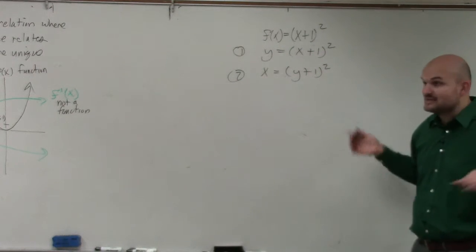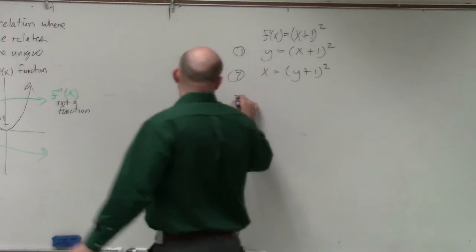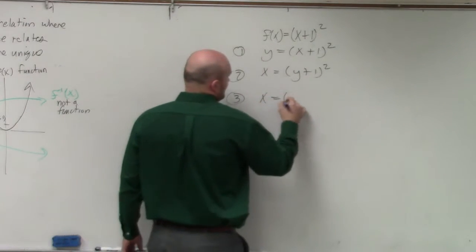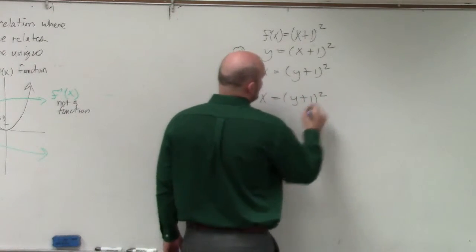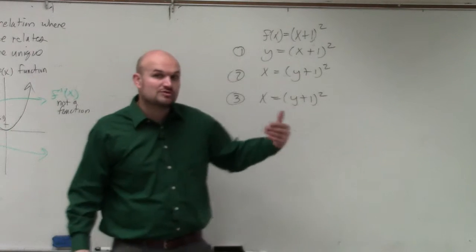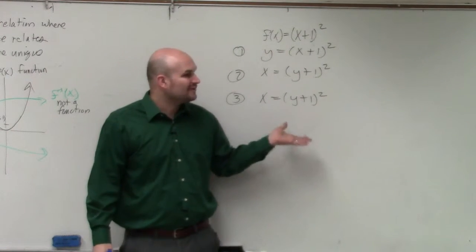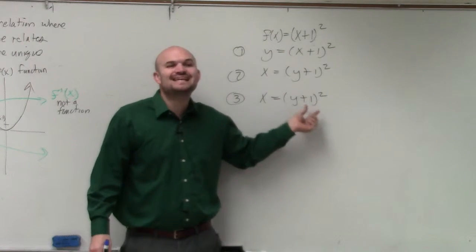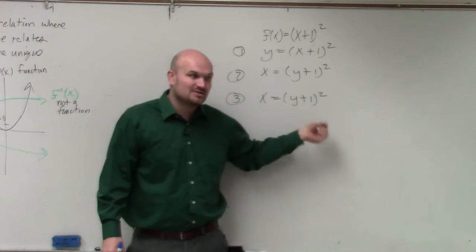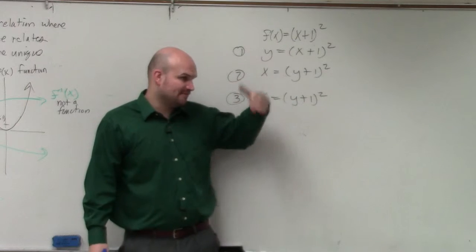OK, now step three is a little bit more difficult. Step three we need to solve. So we have x equals y plus one squared. Again, we need to use the reverse order of operations. Always undo addition and subtraction. However, this addition and subtraction is inside the parentheses, so therefore that would be part of your P in PEMDAS.